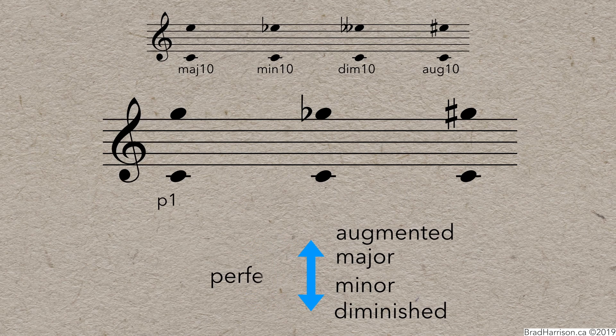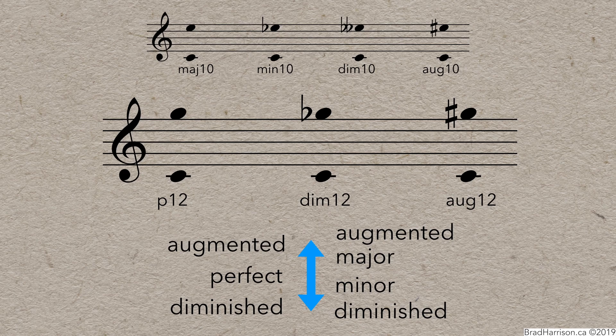And, if any perfect interval is made a semitone smaller, it becomes diminished. If it's made a semitone larger, it's augmented. And that's compound intervals.